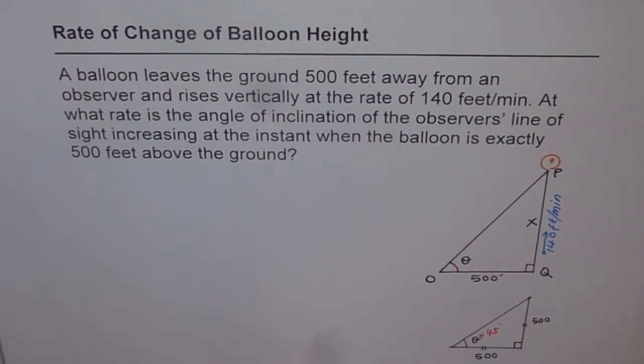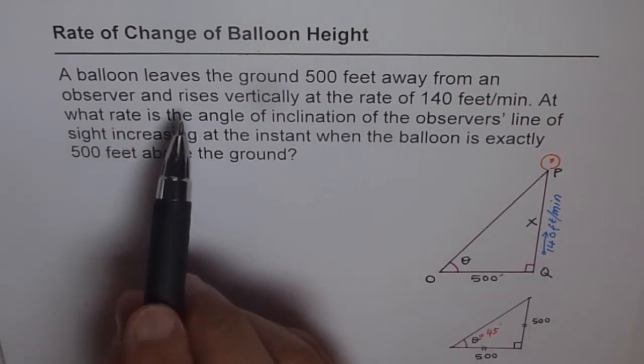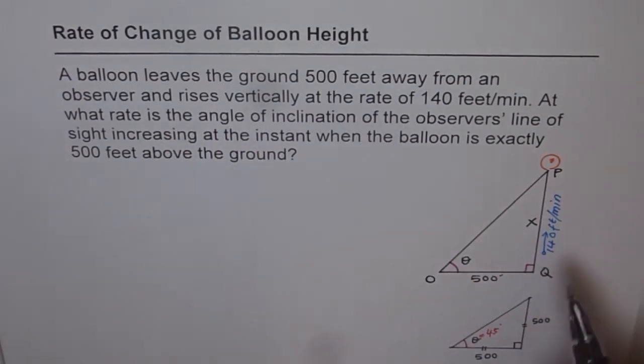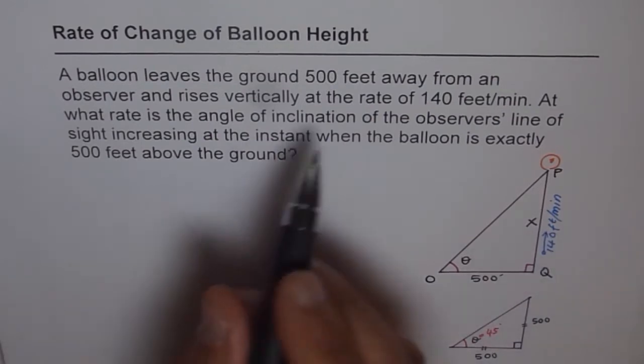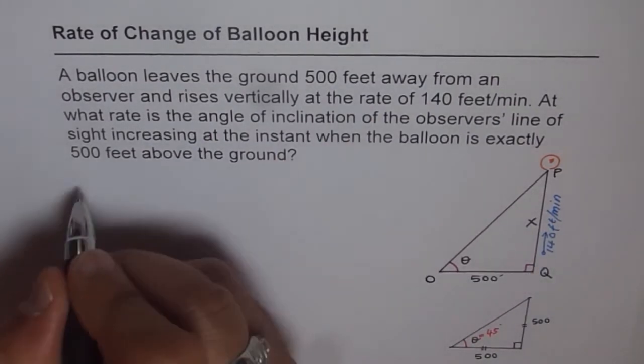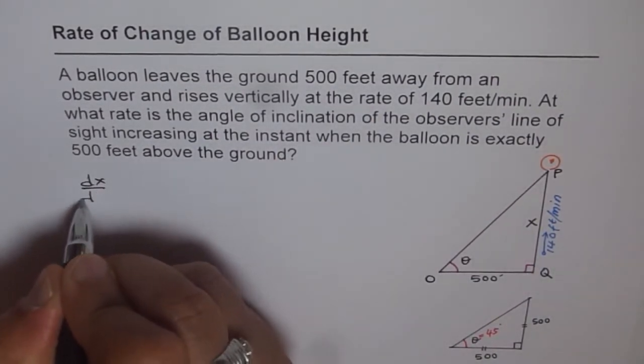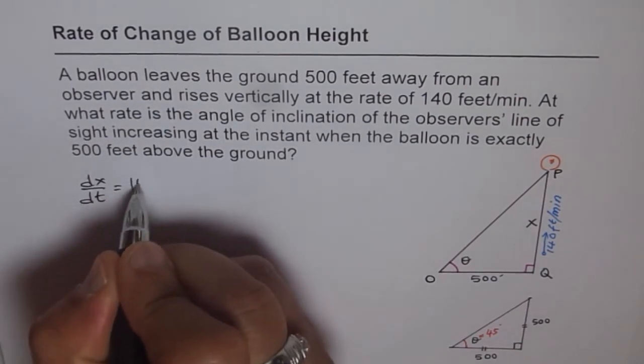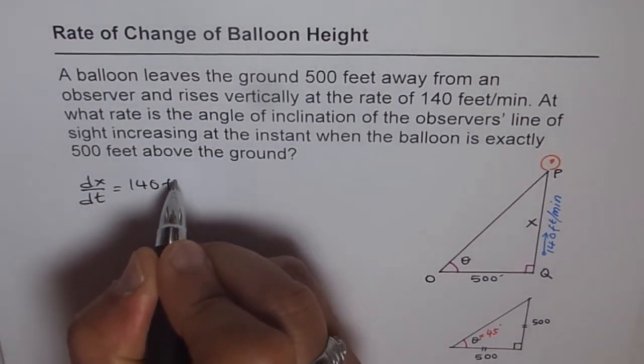So let's write down what do we have. So we are given that the balloon rises. Let me define a variable x which depicts height of the balloon. So in that case dx/dt is the rate at which it is rising. So dx/dt is equal to 140 feet per minute.